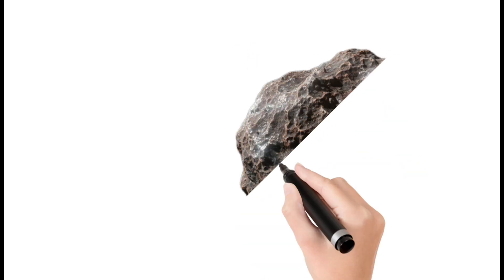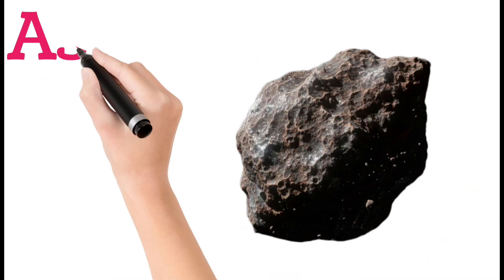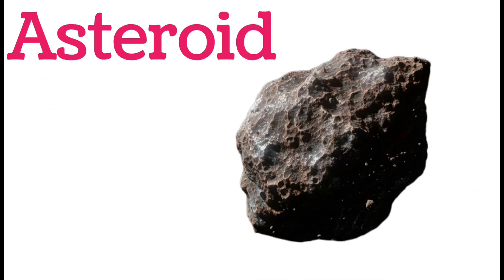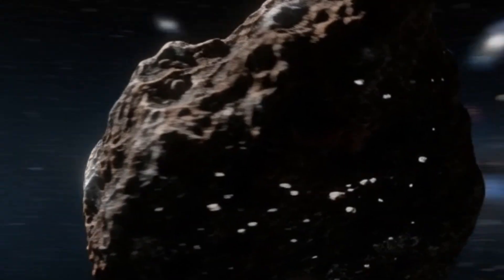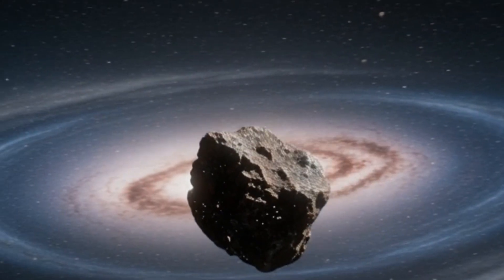Next, Asteroids. Asteroids are rocky objects in space. Most are found between Mars and Jupiter. They vary in size and shape. Some can hit planets.